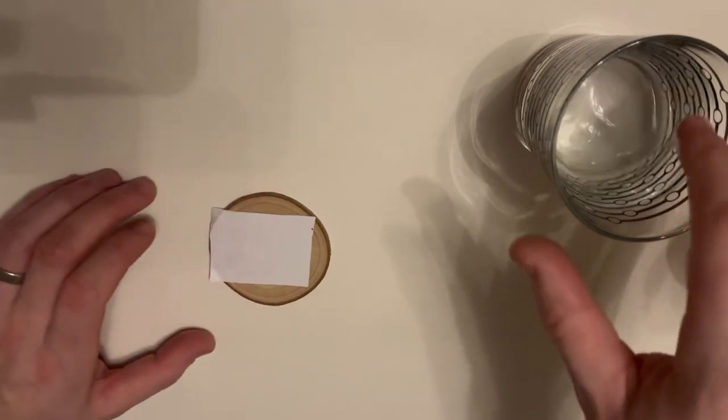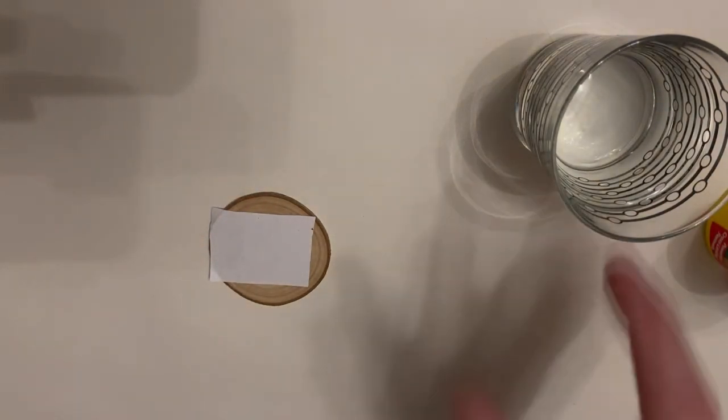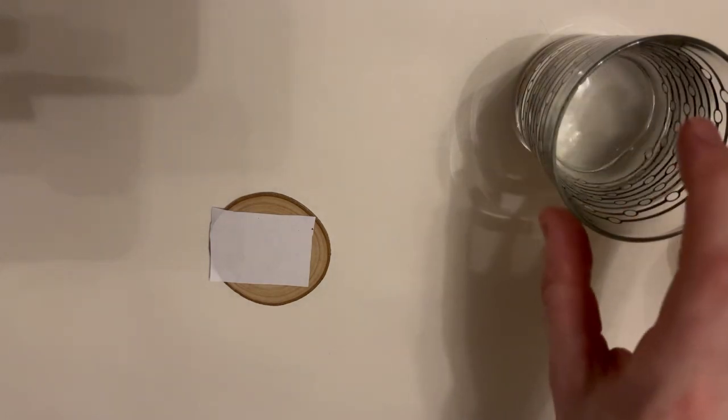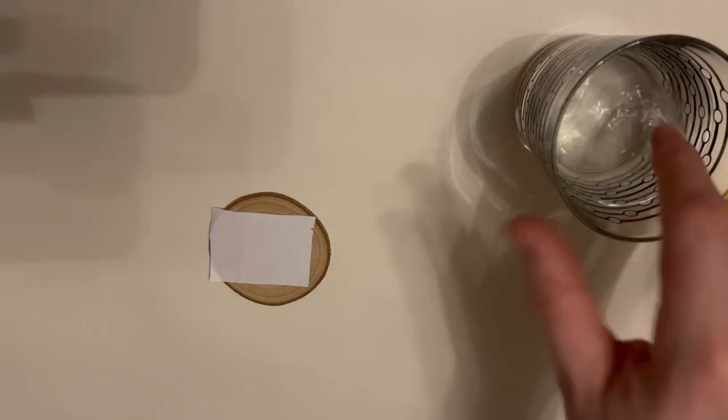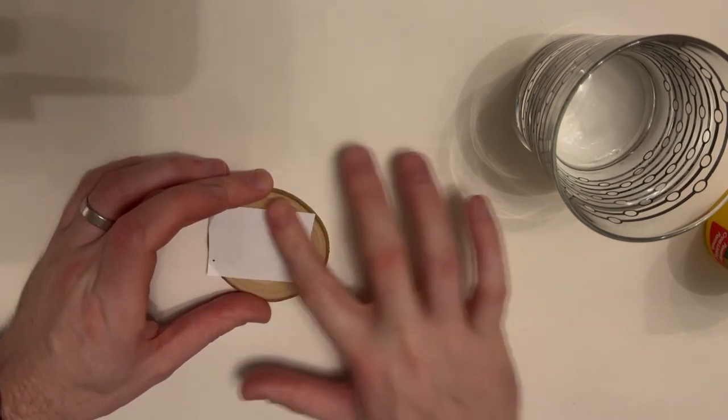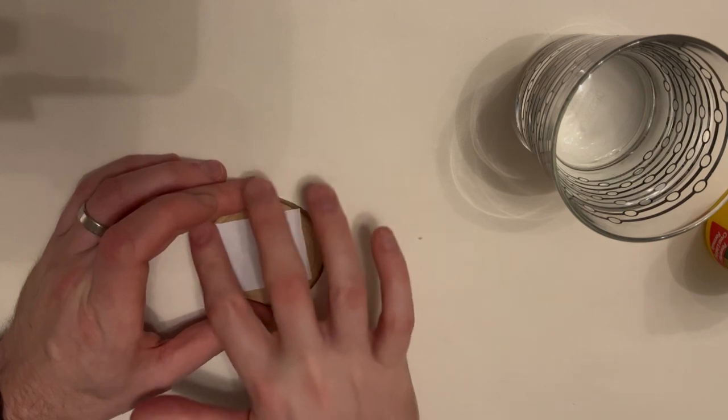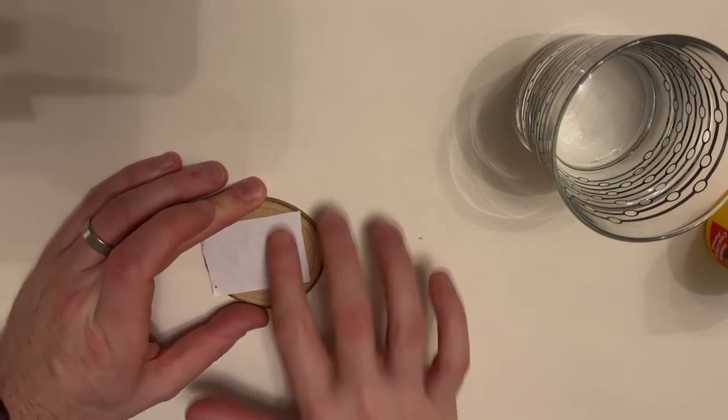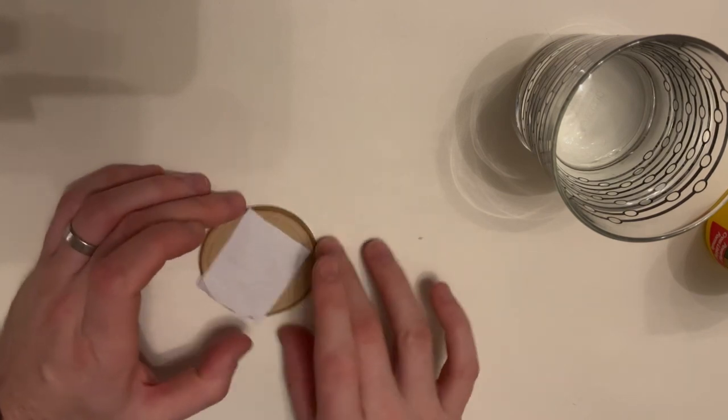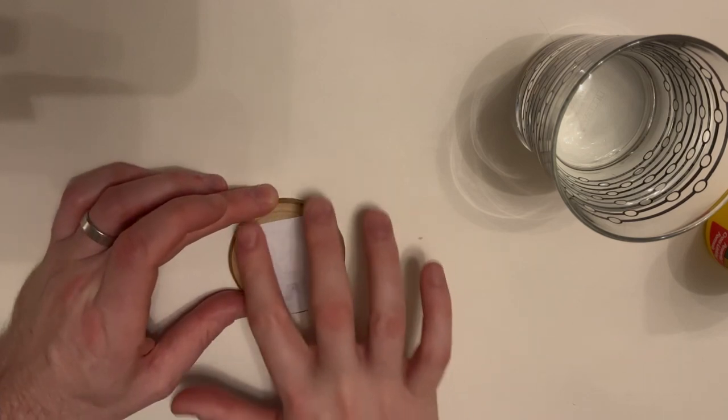Once our piece is dry after leaving it overnight, we want to remove the paper. We have just a glass of water, we dip our finger in the glass of water, and we lightly wet our piece. Not too much water, you don't want to soak it, just lightly wetting it all the edges around.